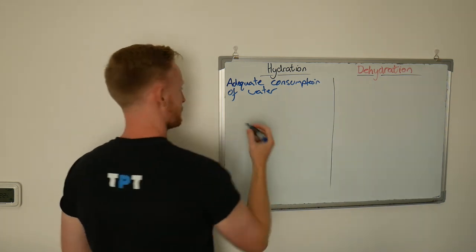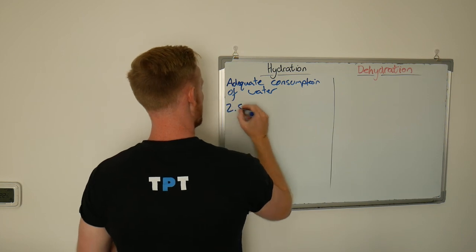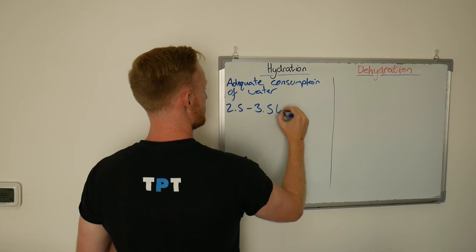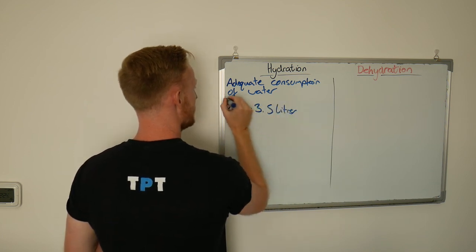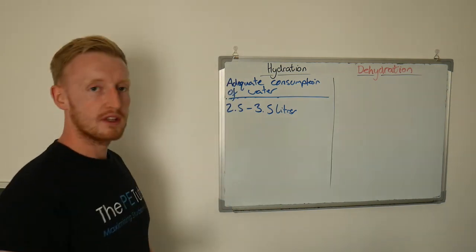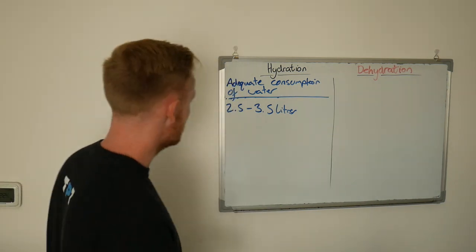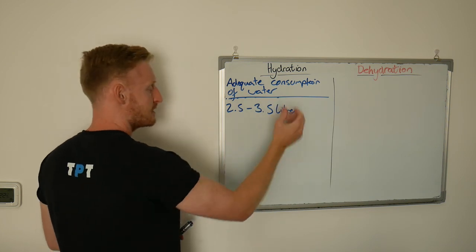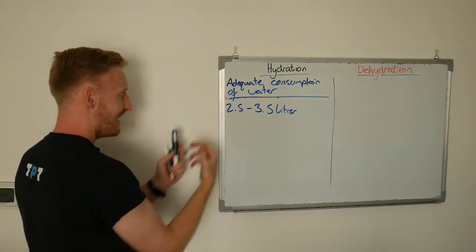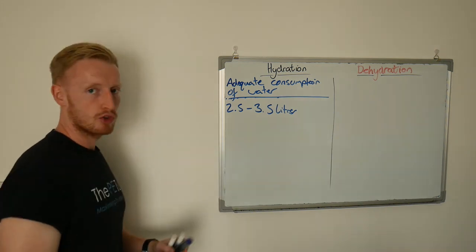So that our body completes or can complete its daily functions and bodily functions without any issues. How do we achieve this? Well it's recommended that people consume anywhere between 2.5 to 3.5 liters per day, according to their size, their body mass, and their daily activity. Obviously the bigger you are and the more active you are, then the more you should drink. The smaller you are and the less active you are, the less you should drink.